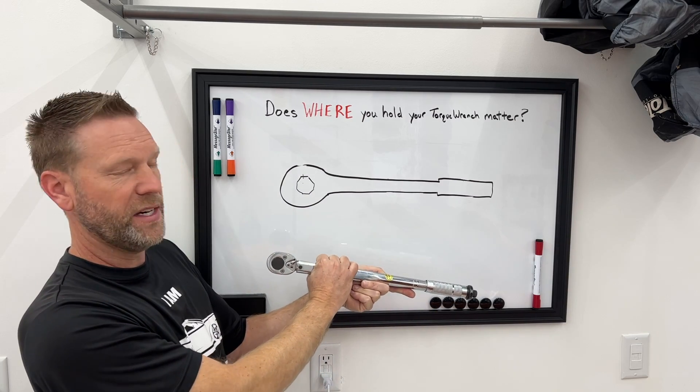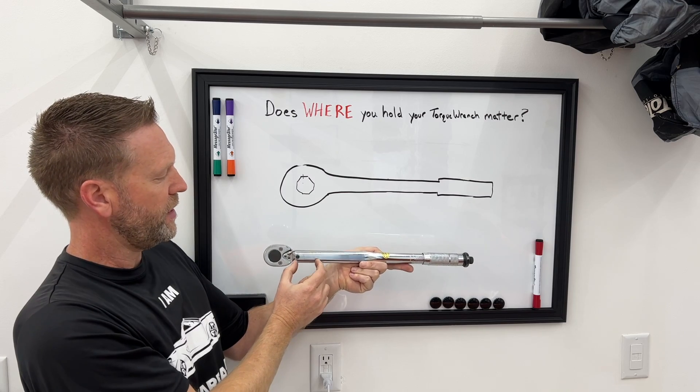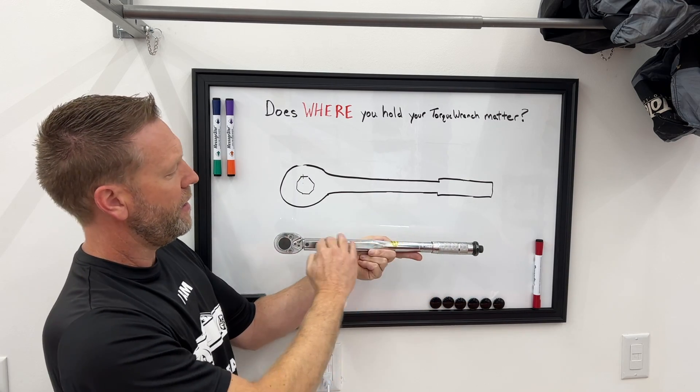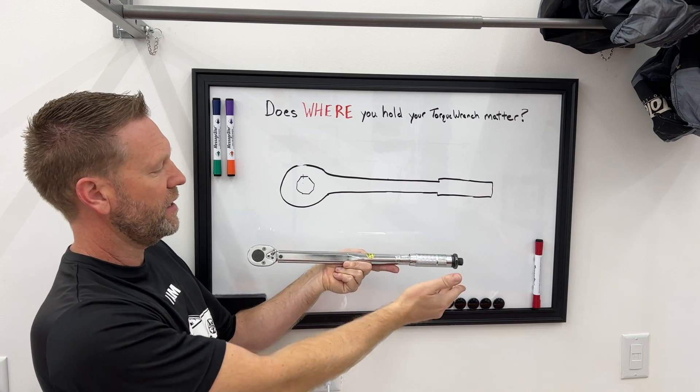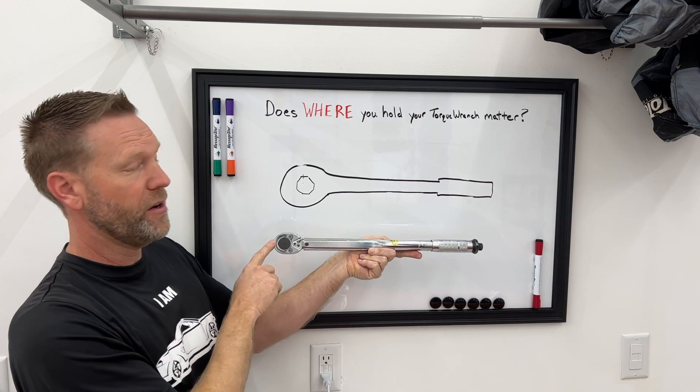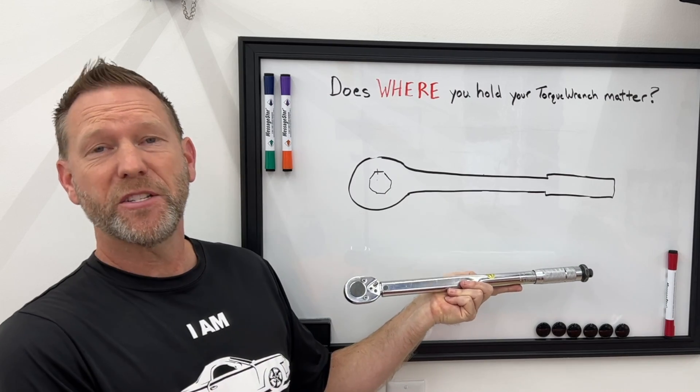So if you are applying pressure here, that part's not going to flex very much. If you're applying pressure here, that bar is going to indeed flex more. And so that is calculated into their reading. So that alone made sense to me.